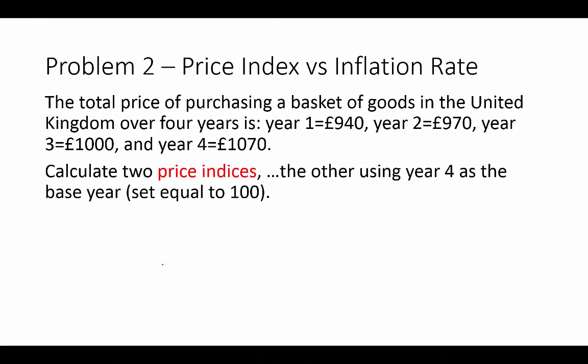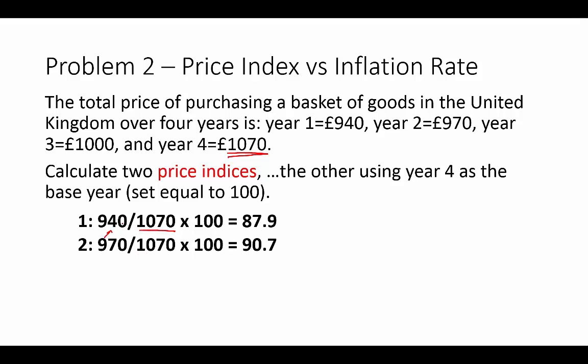Now for the second index, we're using year four — 1,070 — as the base year. That's what we'll divide everything else by. Year four, as the base year, equals 100. For year one, our base year denominator is now 1,070. It's okay that the earlier years come out below 100 — that just shows that compared to year four, all other years had lower price levels. As the price level rises above the base year it will be above 100, and below if it was lower. Years two, three, and four are calculated the same way, with year four of course equaling 100.